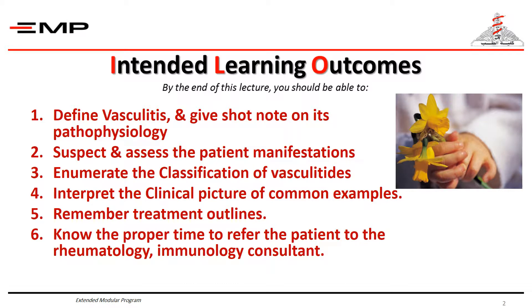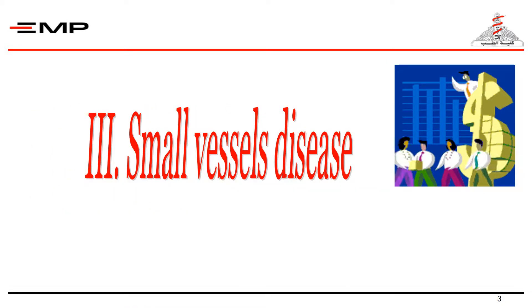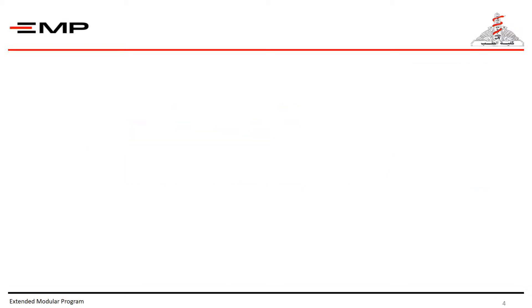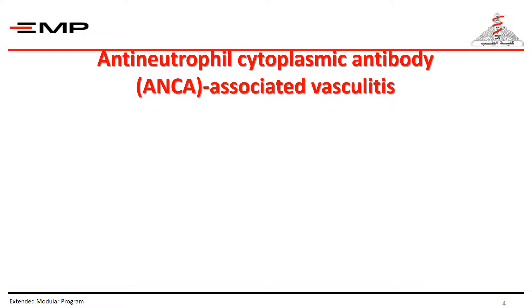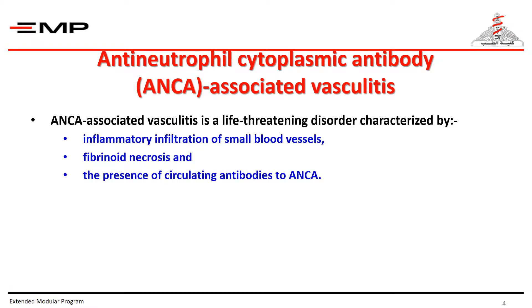These are the ILOs if you want to revise. Now we will discuss small vessel ANCA-associated vasculitis. We will briefly discuss the antineutrophil cytoplasmic antibody, which is a very important issue in small vessel vasculitis. Small vessel vasculitis is subdivided into two main groups: ANCA-associated vasculitis and immune complex-associated vasculitis. ANCA-associated vasculitis is a life-threatening disorder characterized by inflammatory infiltration of the small vessel wall.